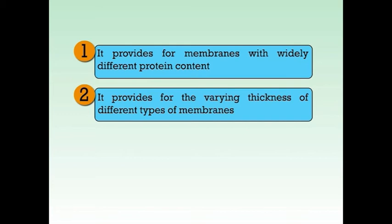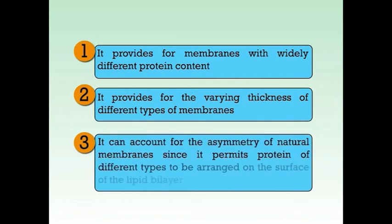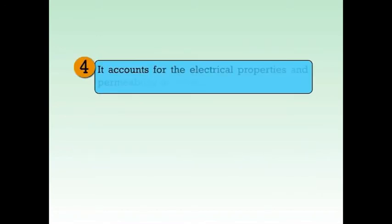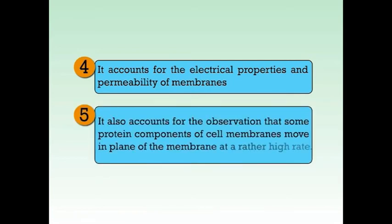Second, it provides for the varying thickness of different types of membrane. Third, it can account for the asymmetry of natural membranes, since it permits proteins of different types to be arranged on the surface of the lipid bilayer. Fourth, it accounts for the electrical properties and permeability of membranes. And last, it also accounts for the observation that some protein components of cell membranes move in the plane of the membrane at a rather high rate.